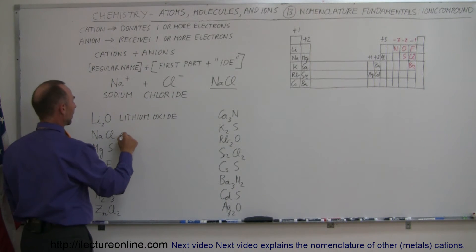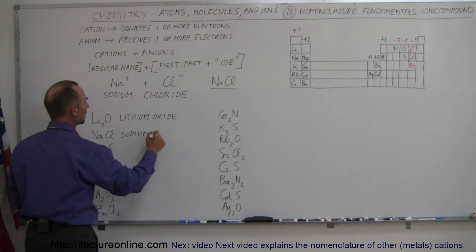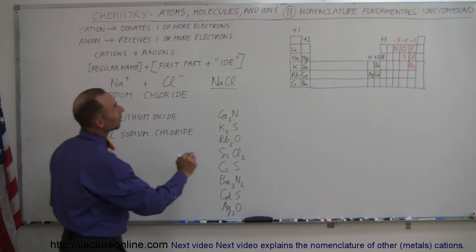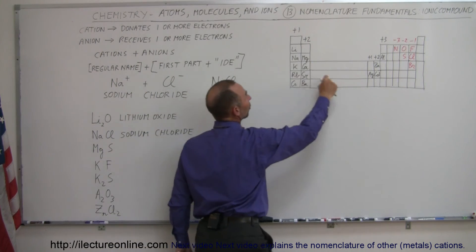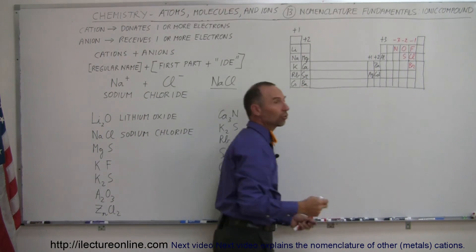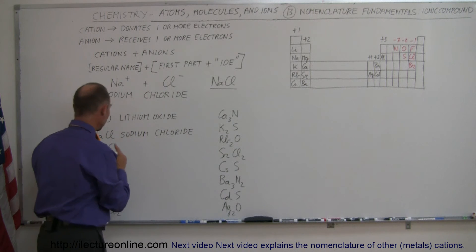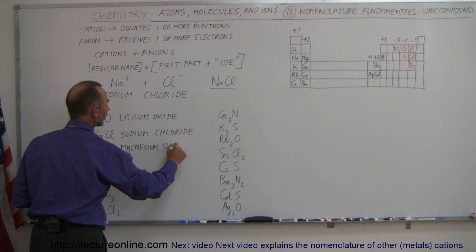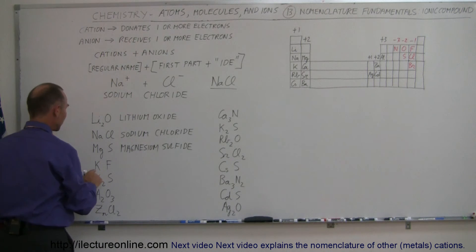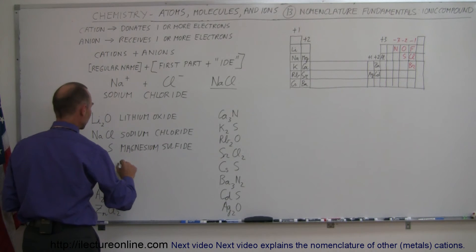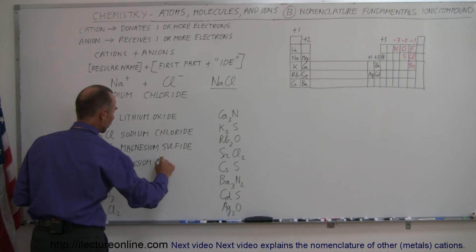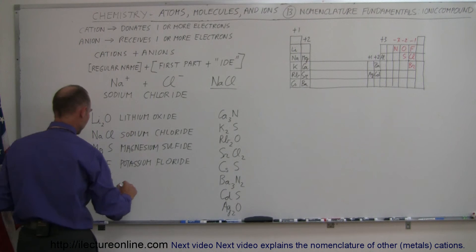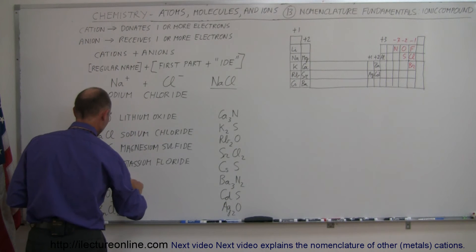Here we have sodium chloride, so we have sodium and instead of chlorine we call it chloride. Here we have magnesium and sulfur. Magnesium becomes positive two charge, sulfur becomes negatively two charge, so that's why they attract each other perfectly at a one-to-one ratio. This becomes magnesium sulfide. Here we have potassium and fluorine, so this becomes potassium fluoride. We have potassium and sulfur, so this becomes potassium sulfide.